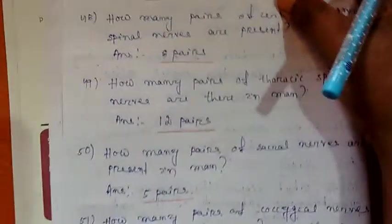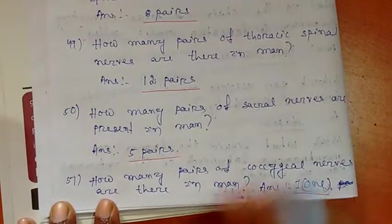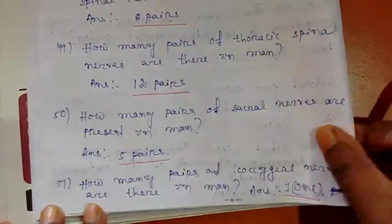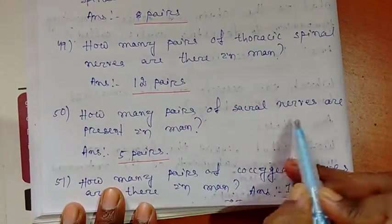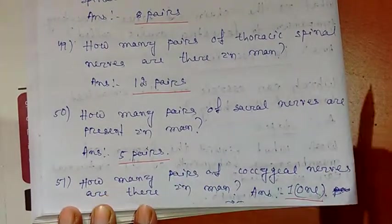Next, question number 50: How many pairs of sacral nerves are present in man? Answer: 5 pairs.